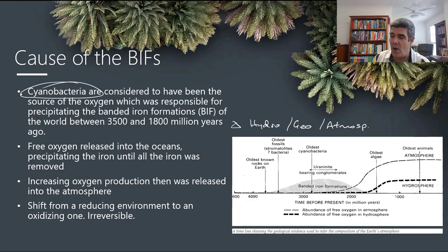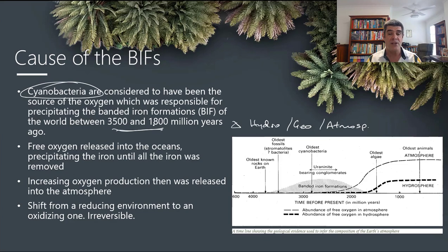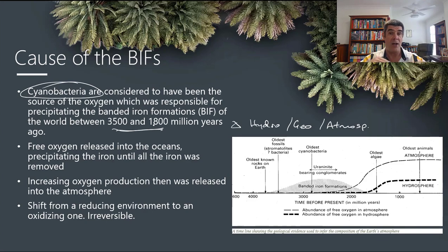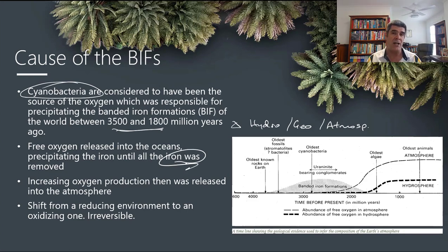The interesting thing about the banded iron formations is that whilst we see them in a lot of rocks between about 3.5 and 1.5 to 1.8 billion years ago, we don't see them beyond that. What might explain this is that if oxygen was continually being produced in the oceans through the photosynthetic activity of cyanobacteria, it was being taken up straight away by the free ions in the water, precipitating iron oxide on the ocean basin. But that was only going to happen until the ions ran out, and once all of that iron was removed from the ocean, the levels of oxygen would start to build up.